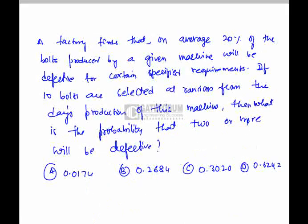In a factory, on average, 20 percent of the bolts produced are defective. If 10 bolts are selected at random from a certain day from this machine, what will be the probability that two or more bolts will be defective?